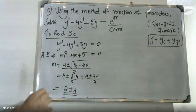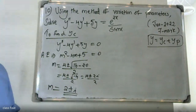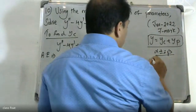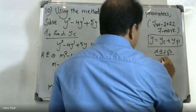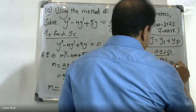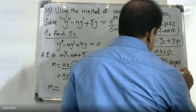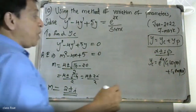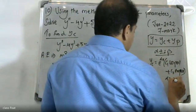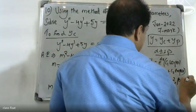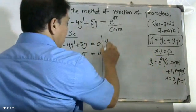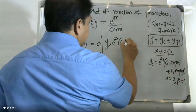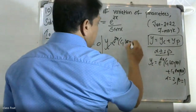For the auxiliary equation, we get roots m = 2 ± i. Our roots are in the form α ± βi, where α = 2 and β = 1. Using the yc formula: yc = e^(αx) (c1·cos(βx) + c2·sin(βx)), therefore yc = e^(2x) (c1·cos(x) + c2·sin(x)).